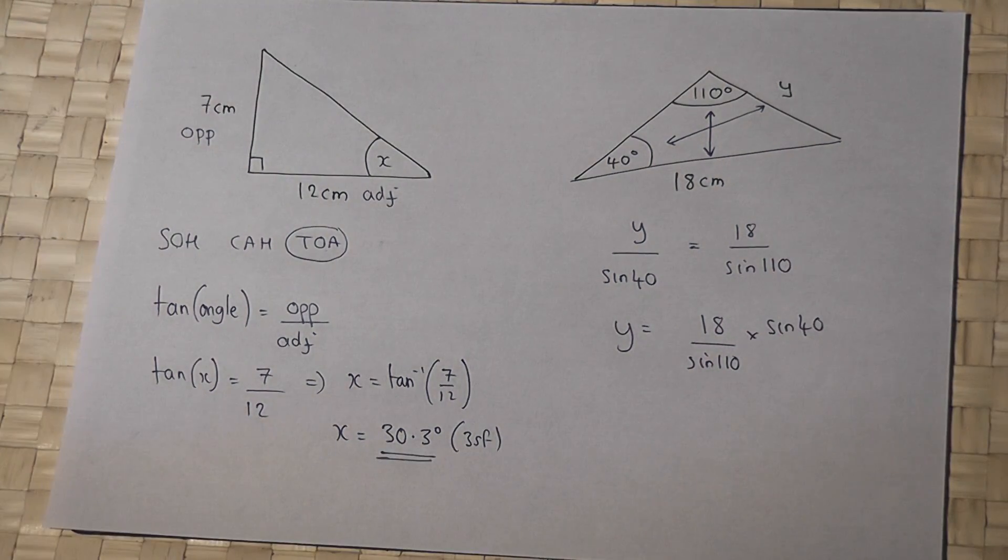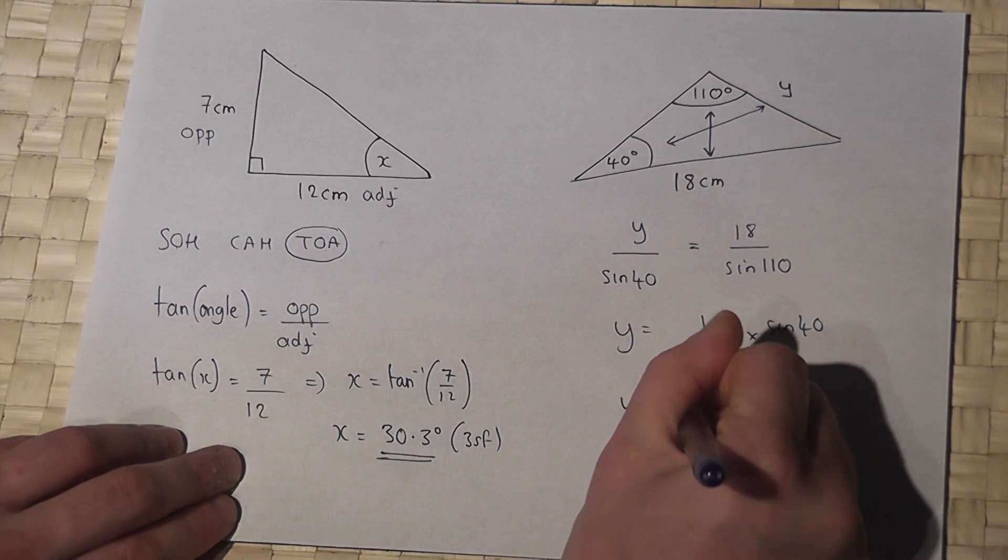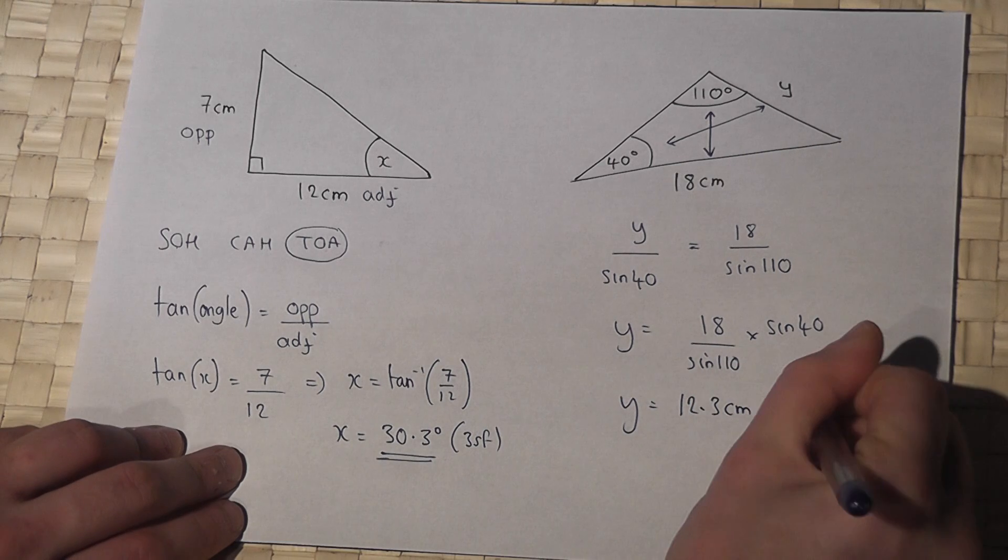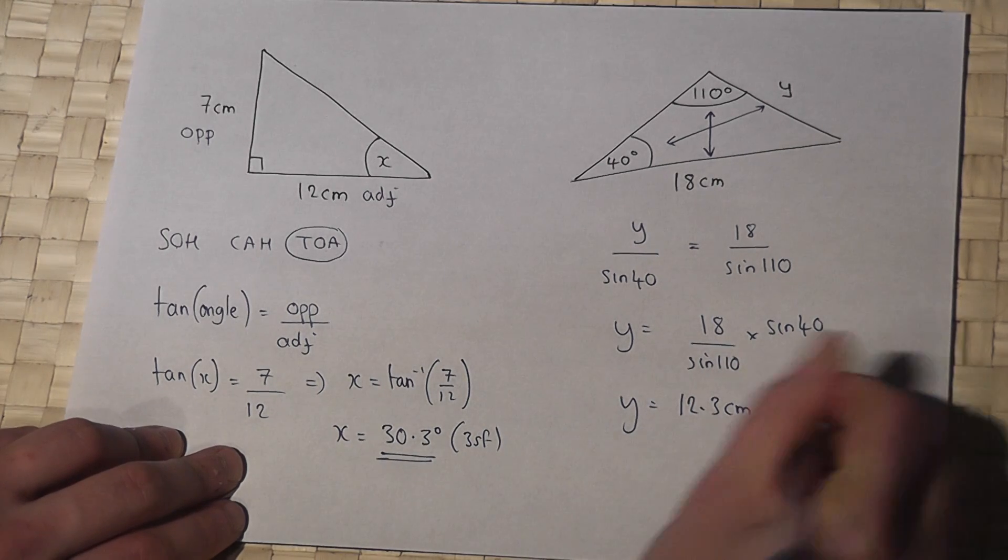So if I enter into my calculator, 18 divided by sine of 110 times by sine of 40, and I get y equals 12.3 centimeters to three s f.